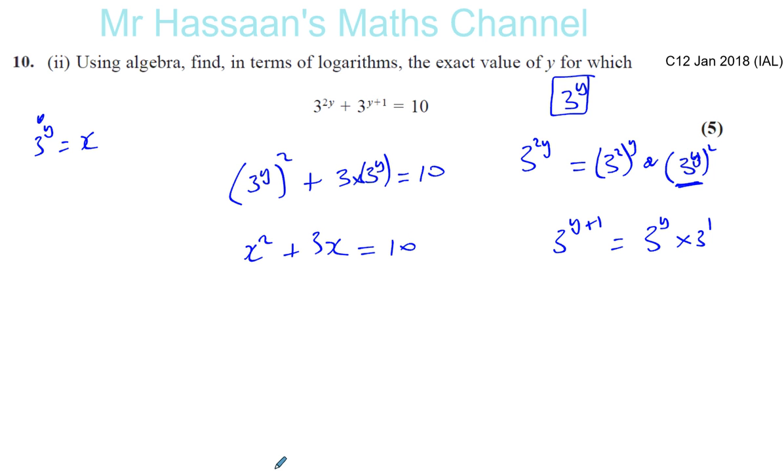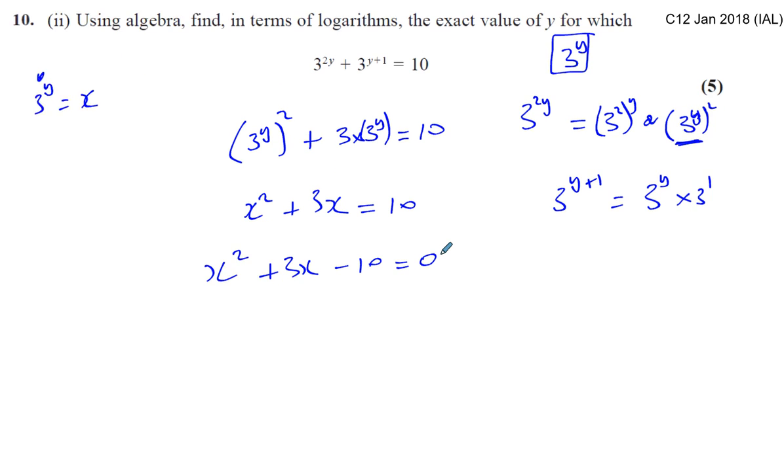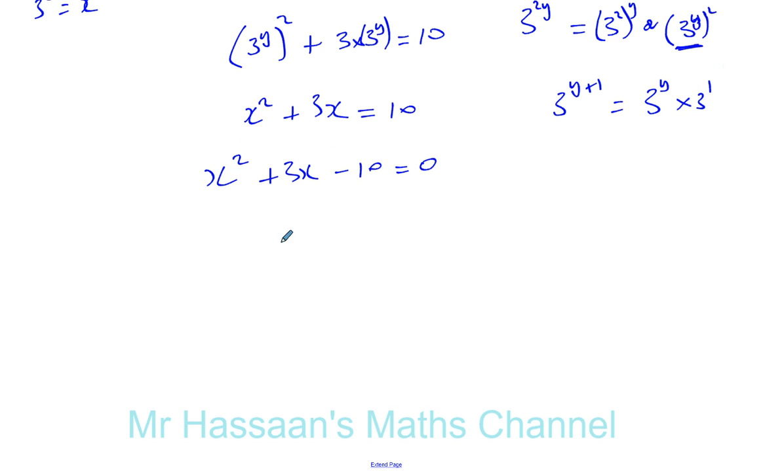Now, we have what seems like a quadratic equation. You've got x squared, x, number 10. Let's bring everything to one side. x squared plus 3x minus 10 equals 0. Now, to solve this equation, we can factorize.